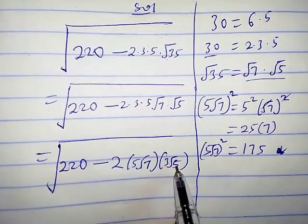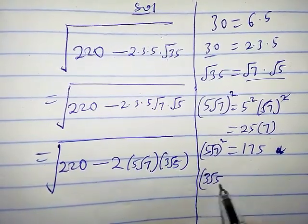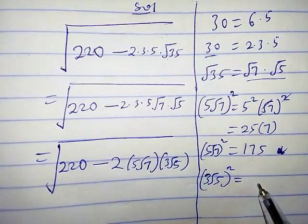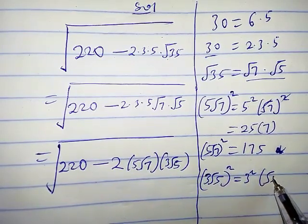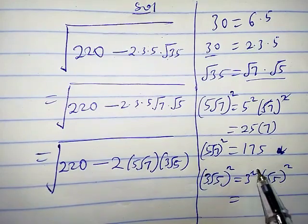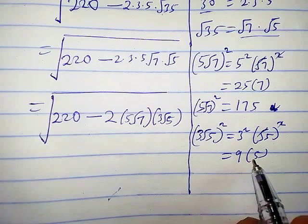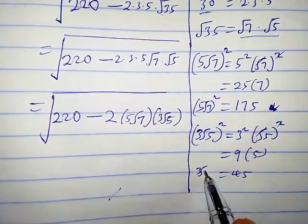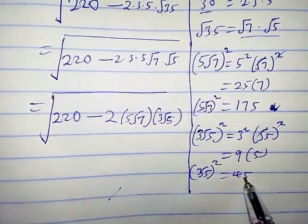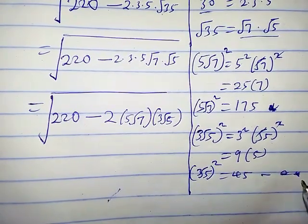Now let's consider the term 3 root 5. We square it: (3√5)² equals 3² times (√5)², which gives 9 times 5, that is 45. So (3√5)² equals 45. Let's take note of this result and call it star star.